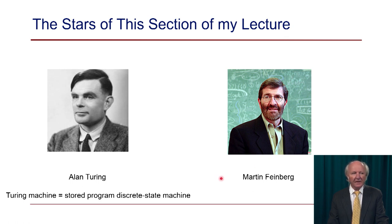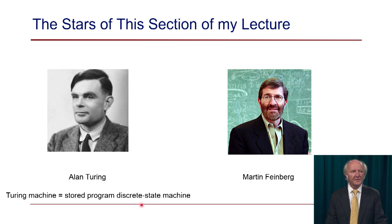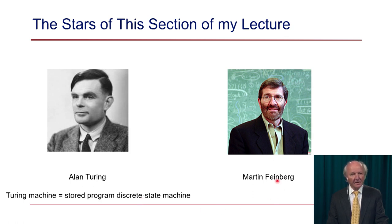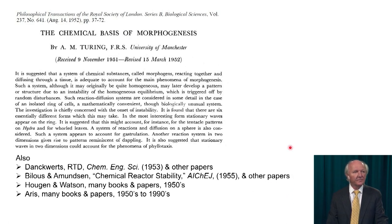The stars of the next section of my lecture are Alan Turing and Martin Feinberg. Turing, because without the stored-program discrete-state machine he invented in his famous 1936 paper — in which he invented the concept of the digital computer and using mathematical logic proved all of its properties — we would not be able to do any of the things I'm going to talk about today. Let's reflect back on what Turing did in the early 1950s. After developing his paper on Turing machine computers, he turned his attention to chemical reaction systems and wrote his classic paper in 1952, which I believe is the first ever to use linear stability analysis on a reaction-diffusion system.